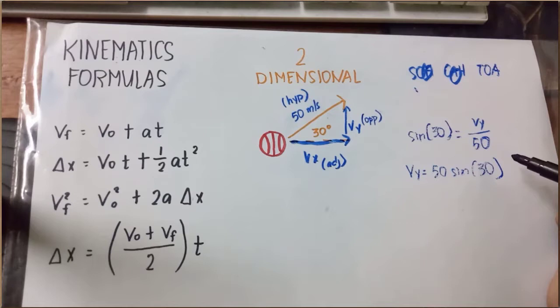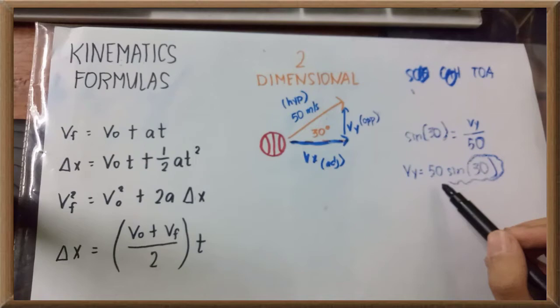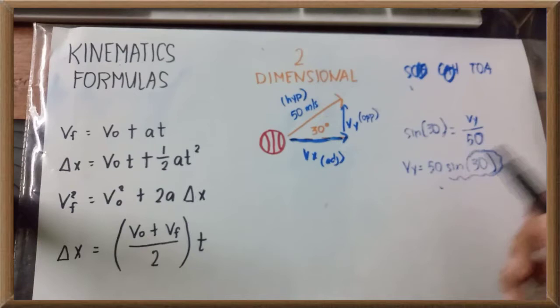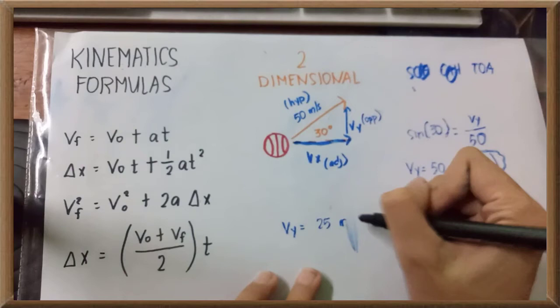At alam naman natin na ang sine of 30 is equal to 1/2. So, the vertical velocity is equal to 50 times 1/2 or 25. At ilalagay natin ngayon ang vertical velocity is equal to 25 meter per second.